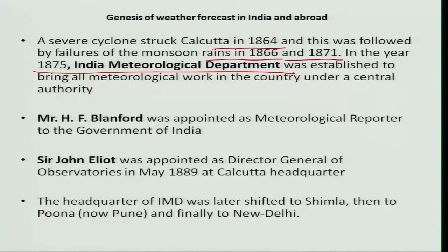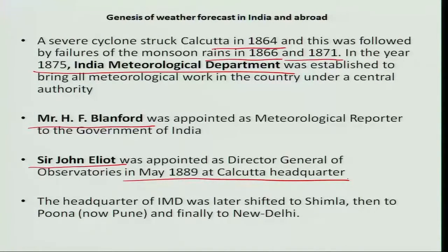After the establishment, Mr. H. F. Blanford was appointed as meteorological reporter to the Government of India. Sir John Elliot was also appointed as Director General of the Observatories in May 1889 at the Kolkata headquarters. Later, the headquarters was shifted to Shimla, then to Pune, and finally placed at New Delhi.